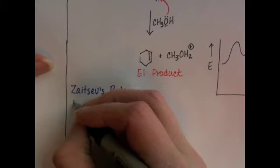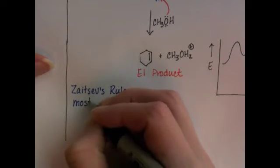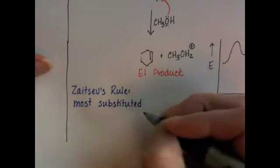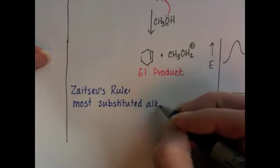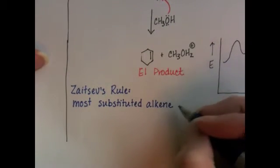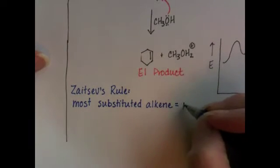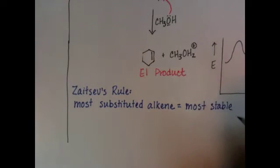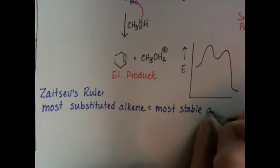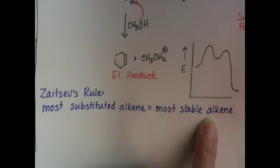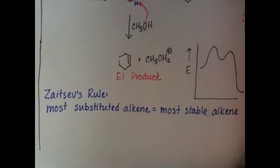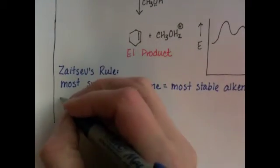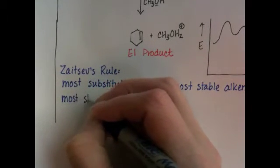Zaitsev's Rule says that the most substituted alkene, the more R-groups you have on an alkene, the more substituted the alkene is, the fewer hydrogens it has, that alkene is the most stable alkene. So if you're comparing two alkenes side by side, the one that has the more R-groups on it is the one that is the most stable. And the way that this applies to E1 is that the most stable alkene is going to be the primary product.